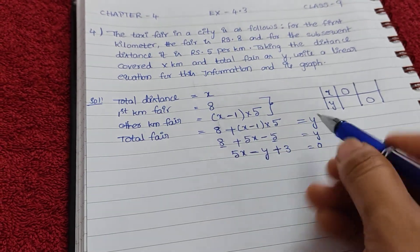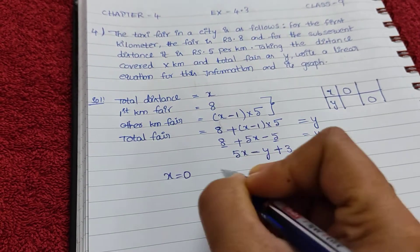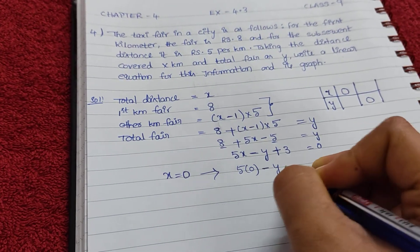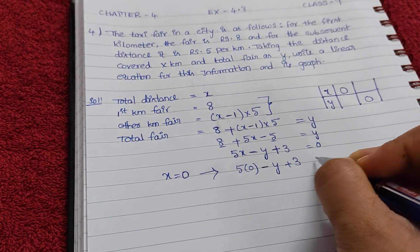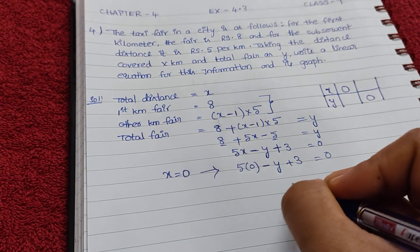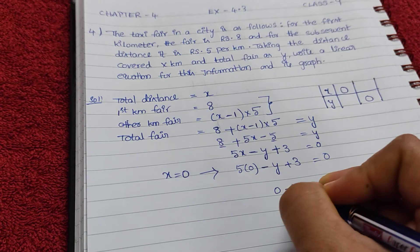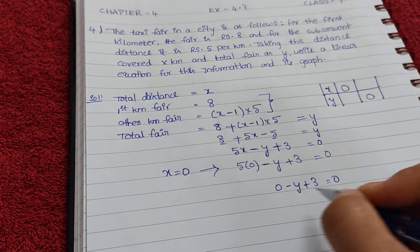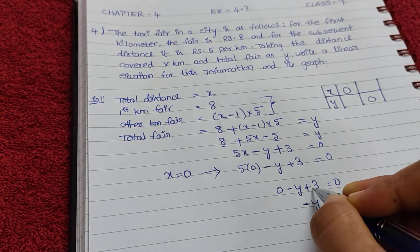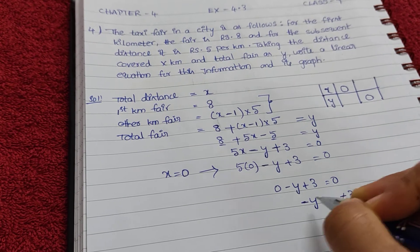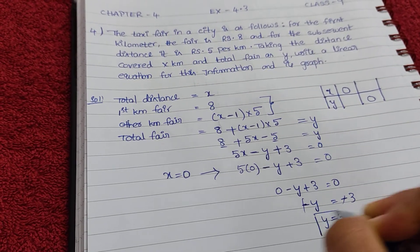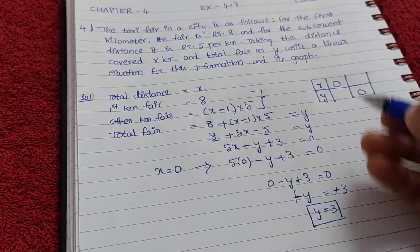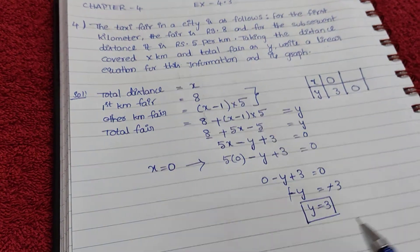First, I'm taking x equals to 0. If x equals to 0, then 5 times 0 minus y plus 3 equals to 0. So 0 minus y plus 3 equals 0. Minus y equals minus 3. Therefore y equals 3. When x value is 0, I got answer y equals to 3.